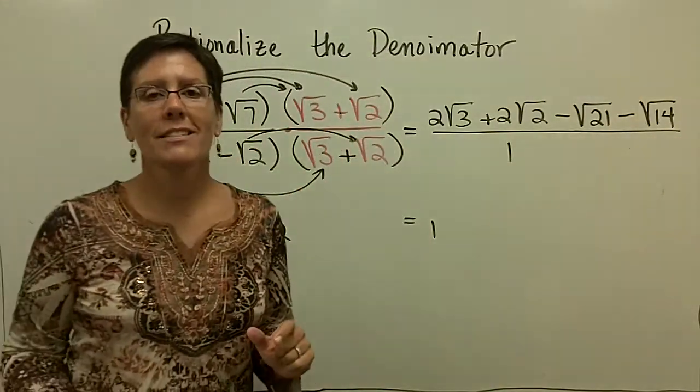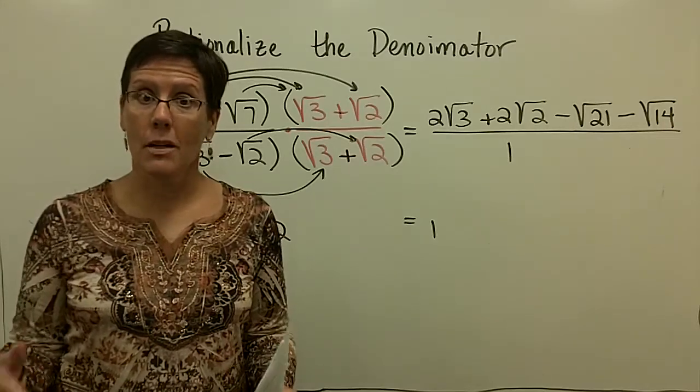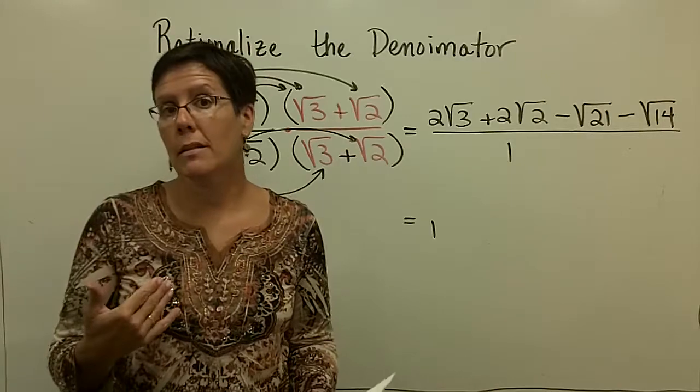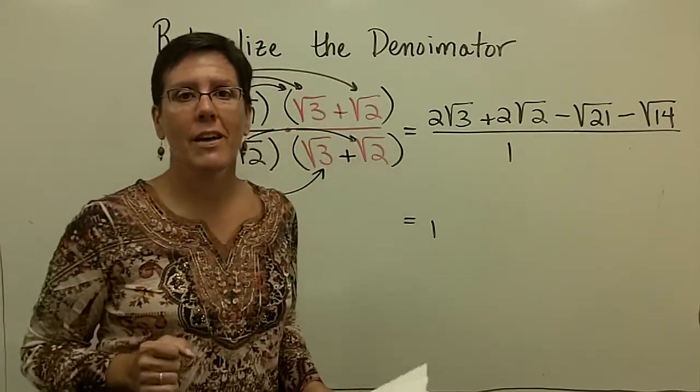We have rationalized the denominator by multiplying by what's called the conjugate. It just involves multiplication. You know, we have this problem that looks like a division problem, but it's multiplying the denominator through and multiplying the numerators through and simplifying if I can.